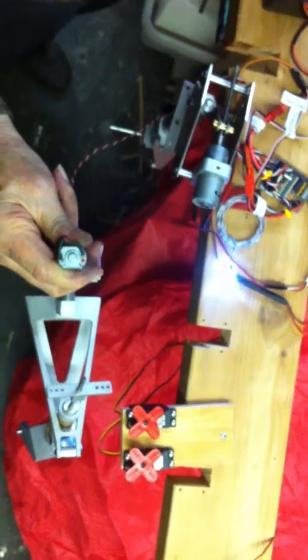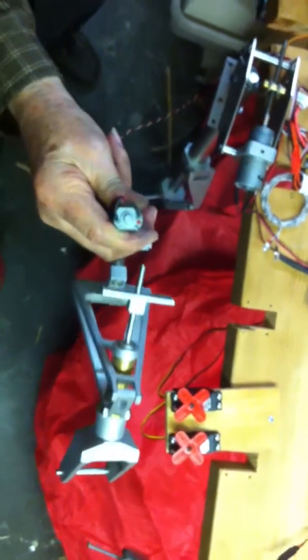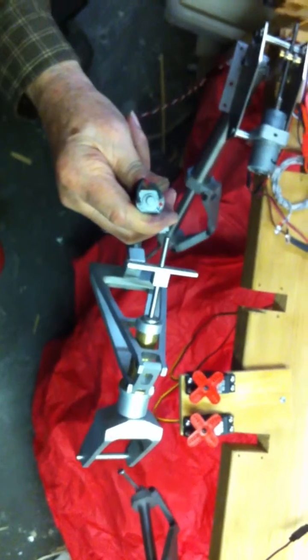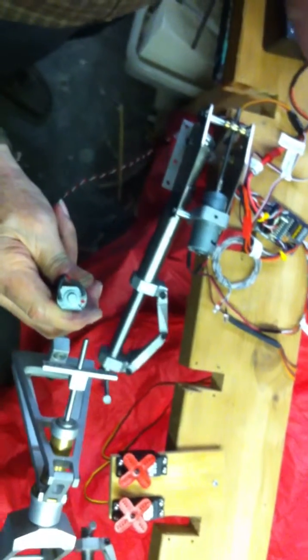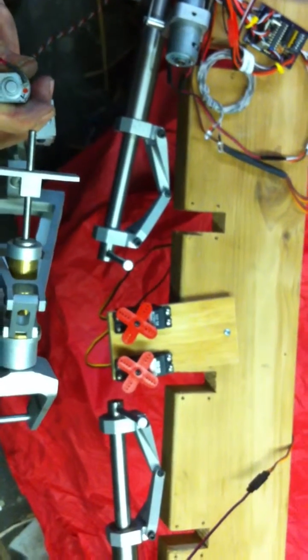We're going to take the switch and go to the up position. You can see the tail wheel's up, main gear's coming up, and the doors shut. Pretty simple.